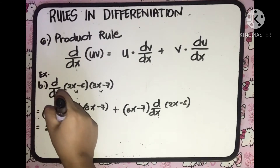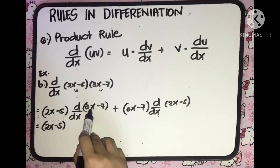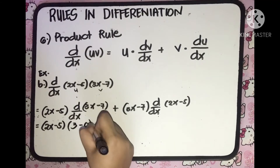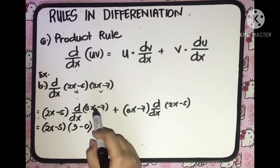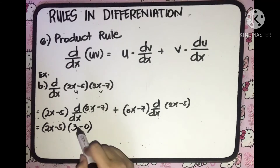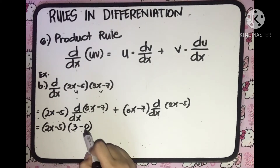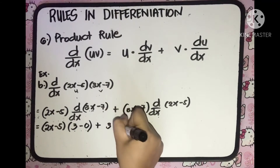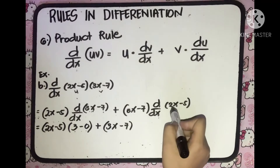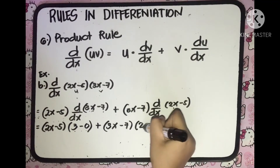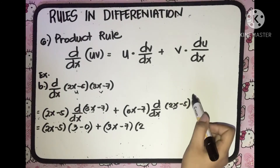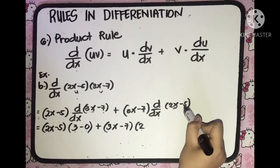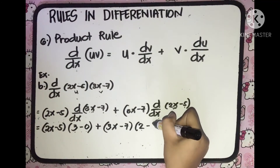We copy 2x minus 5. The derivative of 3x minus 7: the derivative of 3x gives 3 (taking out the constant 3 and multiplying by the derivative of x, which is 1), and the derivative of the constant 7 is 0 — so we get 3 minus 0. Then we copy 3x minus 7. The derivative of 2x: taking out the constant gives 2 multiplied by the derivative of x, which is 1, so 2 times 1 equals 2. Minus the derivative of constant 5, which equals 0.